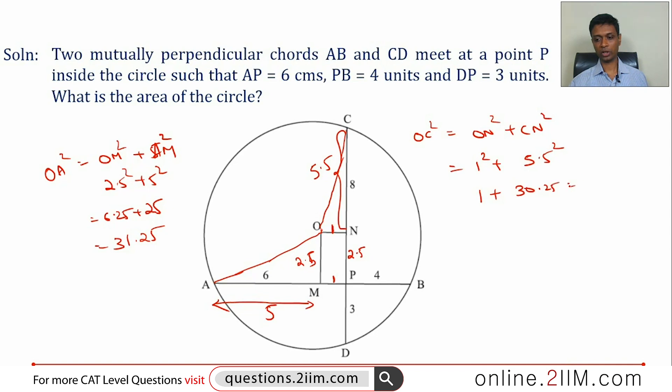We need to find area of the circle which is πr², which is π into 31.25, or π times 125/4. 31.25 into 4, just trying to write it like a fraction - 31.25 into 2 is 62 and a half, becomes 125, so 125π/4.